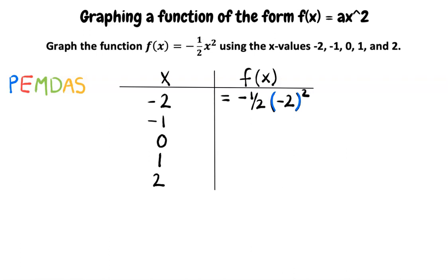Following this method, there is nothing to simplify in the parentheses, so we move on to the exponent. Exponents tell us to multiply a number by itself a specified number of times. In this case, (-2)² means that we need to multiply -2 times -2.